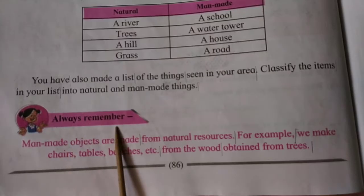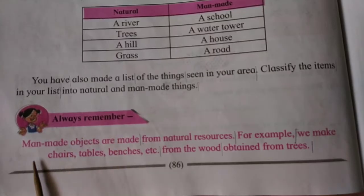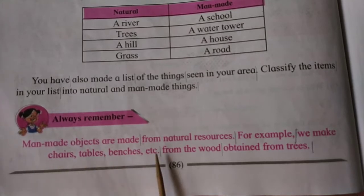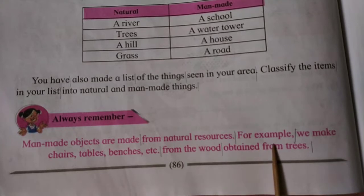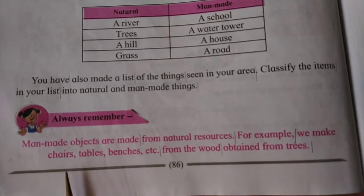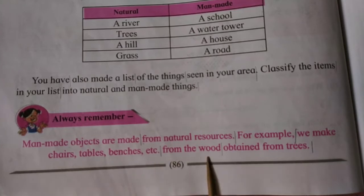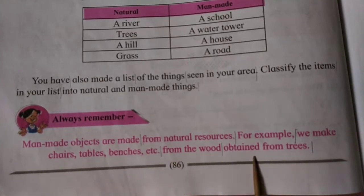Always remember, man-made objects are made from natural resources. For example, we make chairs, tables, benches, etc. from the wood obtained from trees.